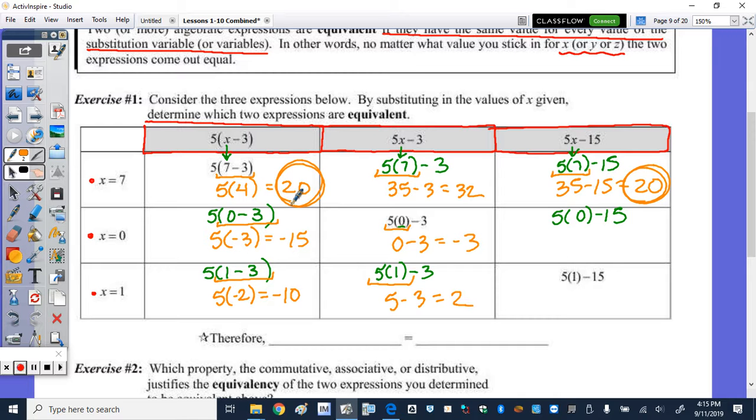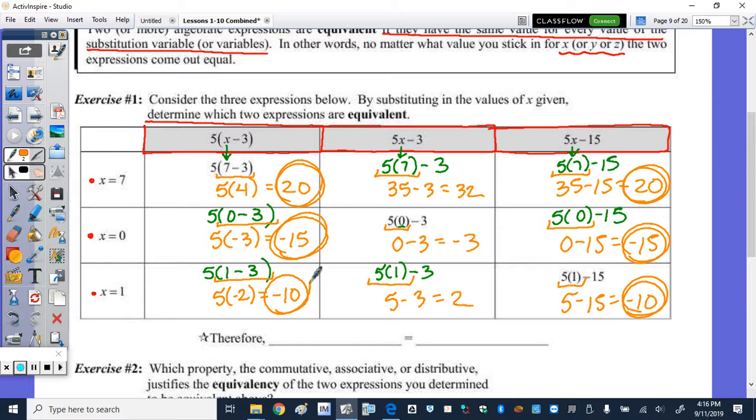Maybe they're equivalent. So let's check here. 5 times 0 is 0. 0 minus 15 is negative 15. Again, another match with that first column. And then 5 times 1 is 5. 5 minus 15 is negative 10, which is our third match.